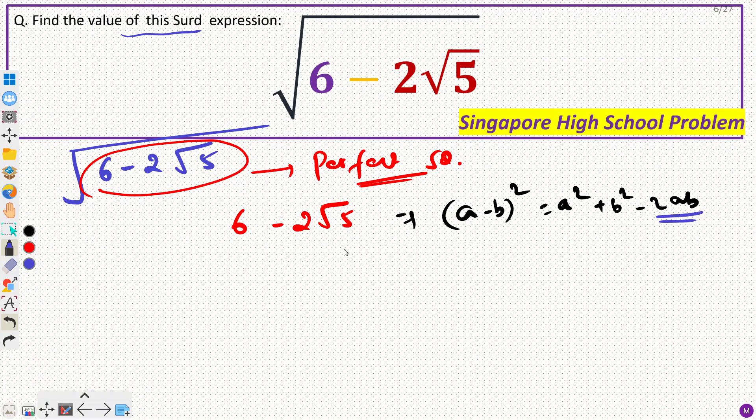I can say that this 2ab would be 2 root 5. So, you have to find two terms a and b such that sum of their squares would be 6 and their multiplication would be root 5.